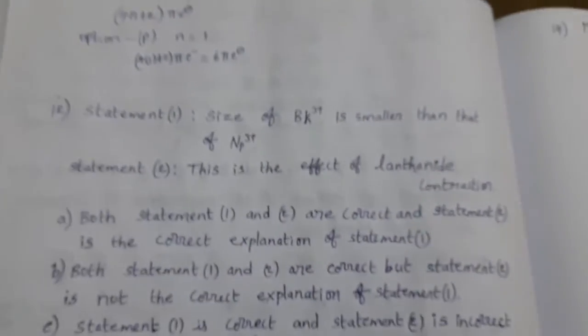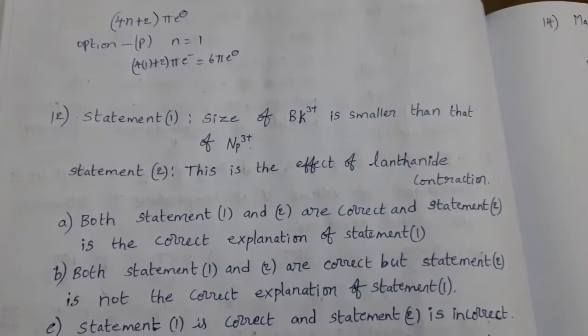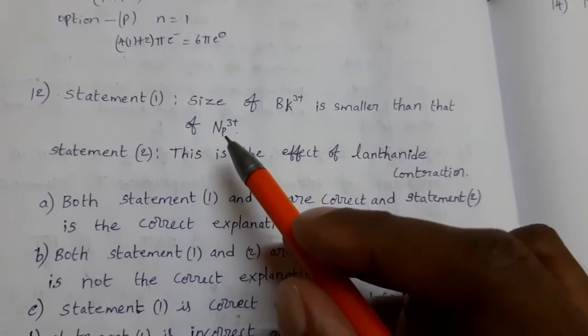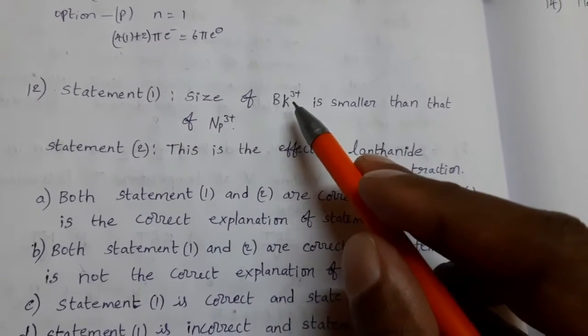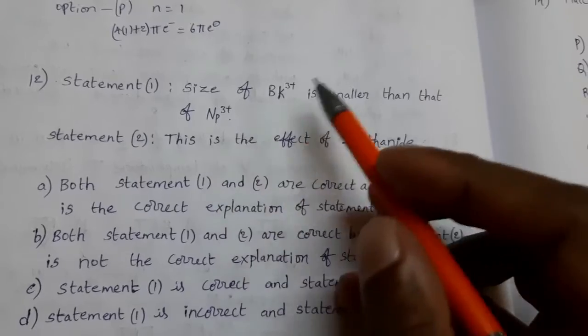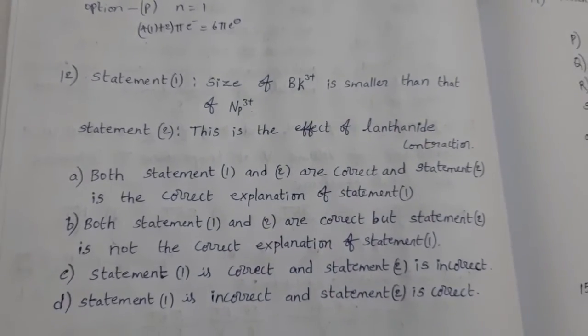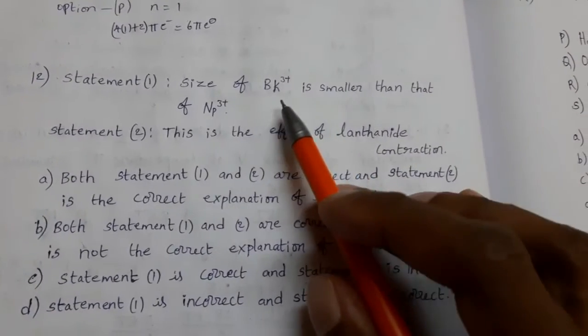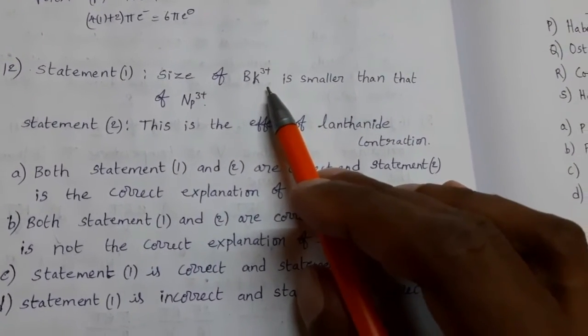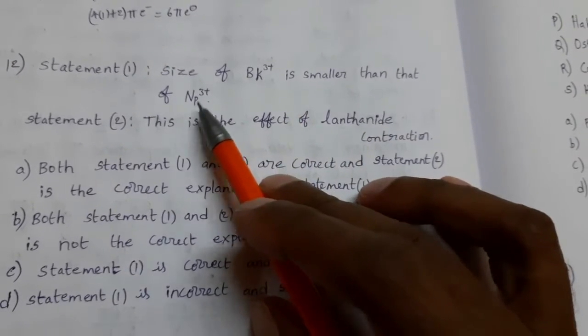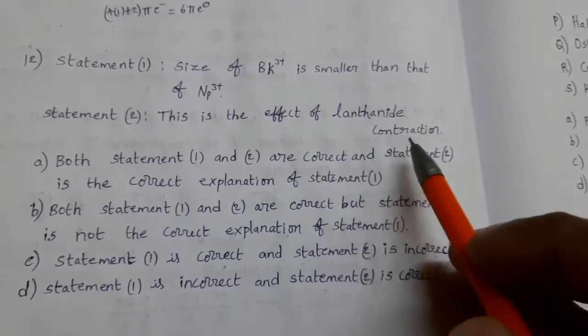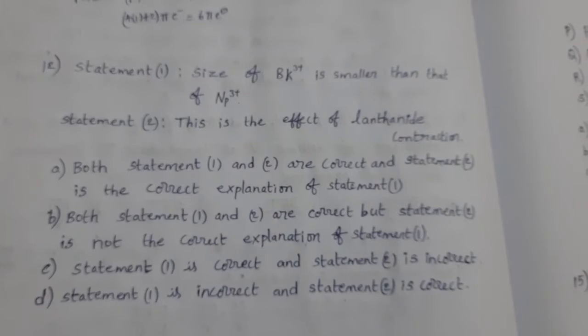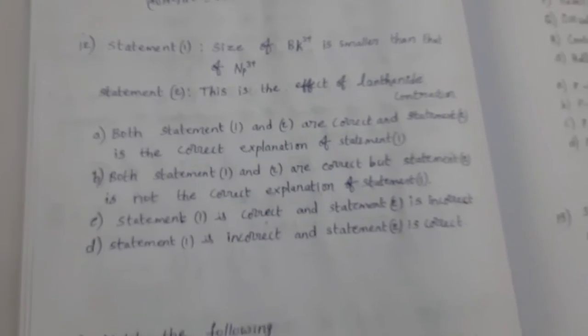Next question. Statement type questions. Statement 1: Size of Bk3+ is smaller than that of Np3+. Bk means berkelium, Np means neptunium. These two elements are actinoids. Statement 2: The given statement is correct. Berkelium ion 3+ size is smaller than this one. This is the effect of lanthanoid contraction. This is wrong. Because these two elements belong to actinoid series, not lanthanoid.